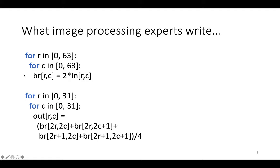For example, on the left we've got a cartoon of an image processing application where there are two stages or two loop nests. The first one takes in a 64 by 64 image and brightens it by multiplying every pixel by 2. The second one downsamples this 64 by 64 image into a 32 by 32 image by averaging together every consecutive 2 by 2 square of pixels.